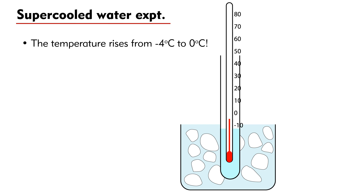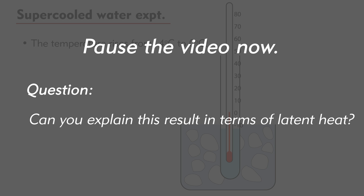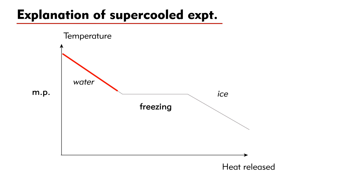When a piece of ice is added into the supercooled water, the temperature rises from minus 4 degrees Celsius to 0 degrees Celsius. Can you explain this result in terms of latent heat? According to the cooling curve, latent heat of fusion is released from water as it freezes into ice. For ordinary freezing, this takes place slowly so that the latent heat is slowly released from the water, and the mixture of ice and water will remain at 0 degrees Celsius during the whole freezing process.